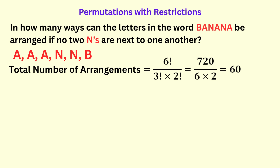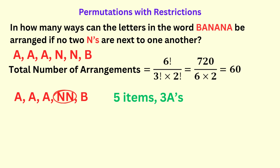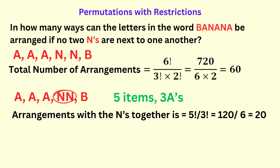Our restriction says the two N's must not be next to each other, so we need to subtract the number of arrangements where the N's are together. Let's treat the two N's as one block, which can only be arranged one way — even when switched around, since the N's are identical. That gives us five items to arrange, where A appears three times. So the number of ways the letters can be arranged with the N's together is five factorial divided by three factorial, which equals one hundred twenty divided by six, equals twenty arrangements.